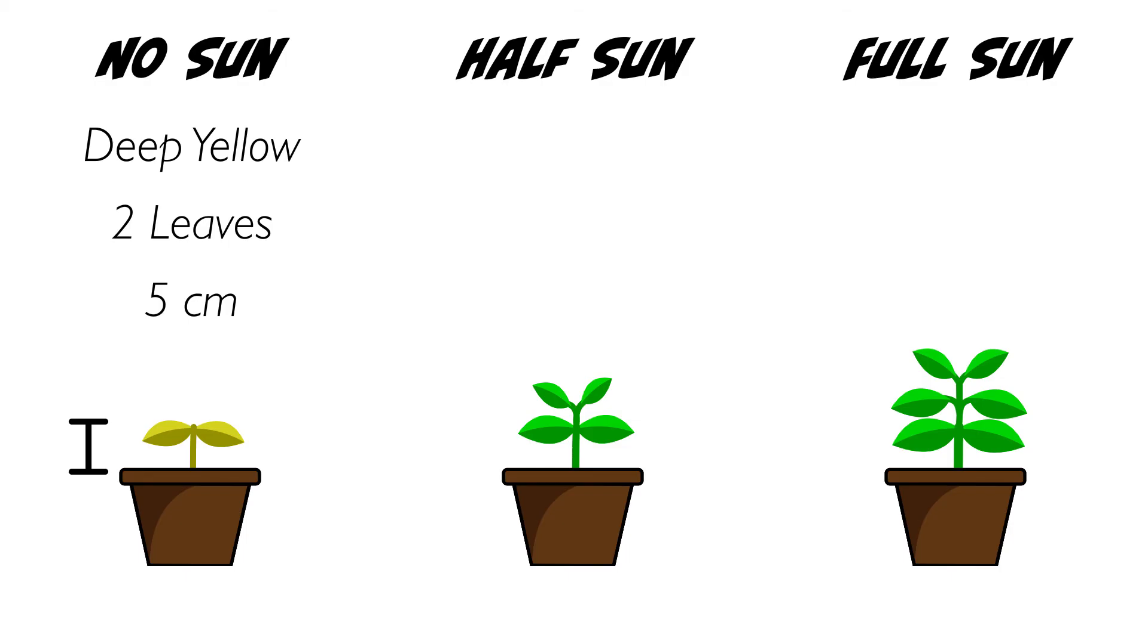In the half-sun case, we observe a plant that has a healthy deep green color. The plant has four leaves and is ten centimeters tall.